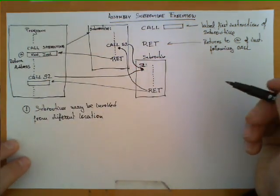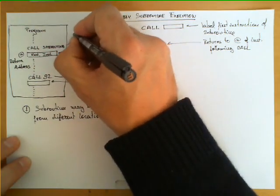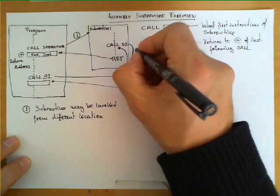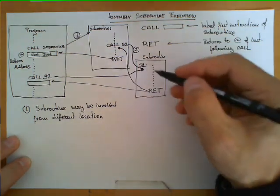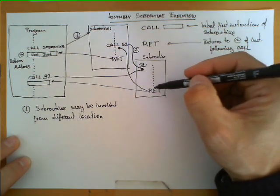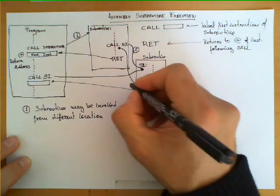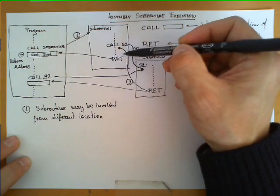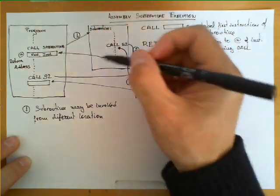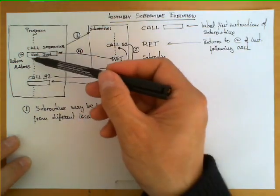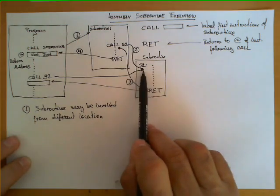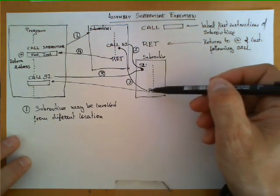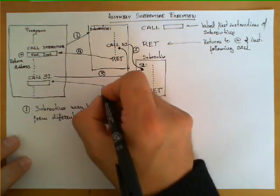Let's review the sequence of steps. Arrow 1: the main program invokes the first subroutine via CALL. Arrow 2: that subroutine makes a call to S2. Arrow 3: S2 executes to its RET instruction and returns back to the first subroutine. Arrow 4: the first subroutine hits its own RET and returns to the main program. Arrow 5: the main program reaches its direct call to S2. Arrow 6: S2's RET now returns back to the main program's instruction following that call.